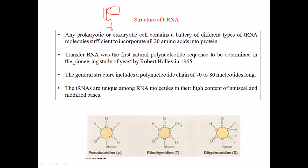Among all those RNAs, tRNA possesses various types of modified bases like pseudouridine, ribothymidine, or dihydrouridine. We have previously talked about pseudouridine where there is a structural difference in these regions. We have ribothymidine and also dihydrouridine where two extra hydrogen groups are present at those two positions.